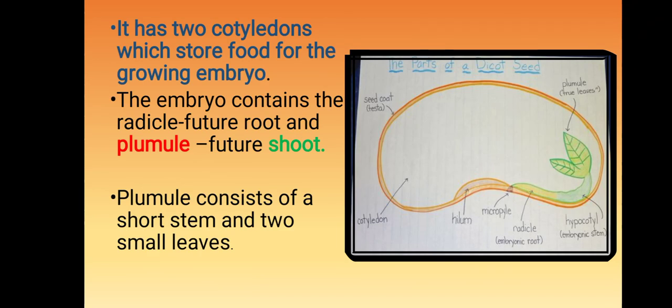The seed has two cotyledons which store food for the growing embryo. The embryo contains the radicle, which is the future root, and the plumule, which is the future shoot.